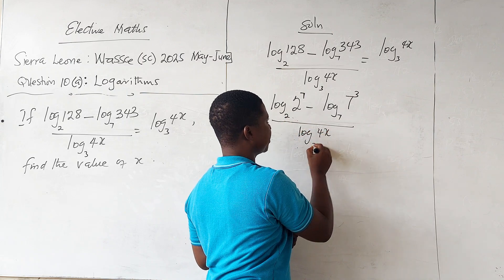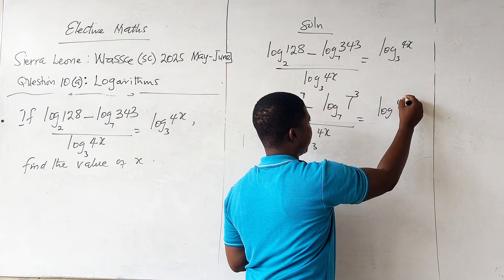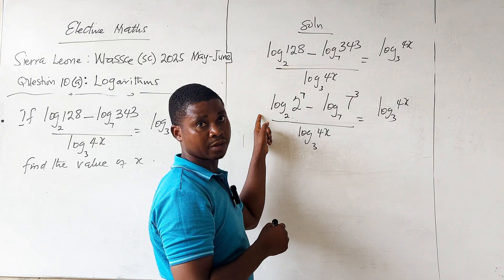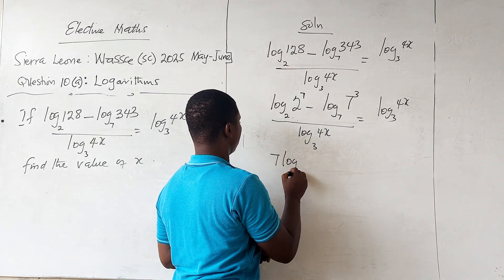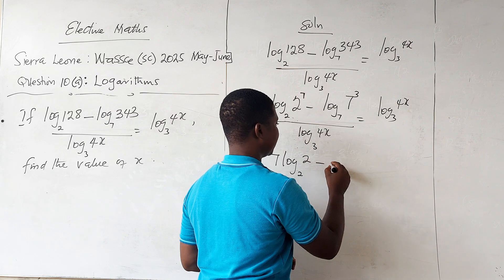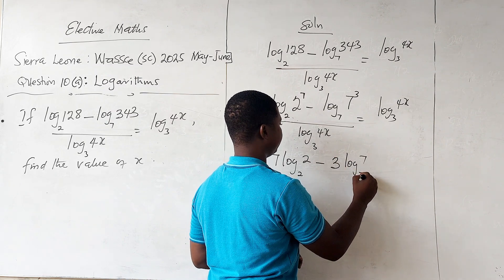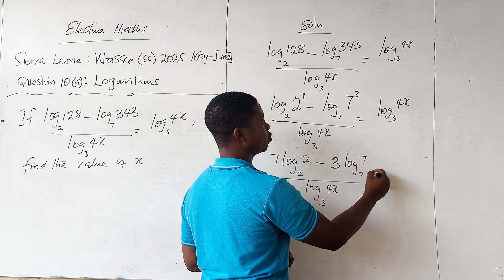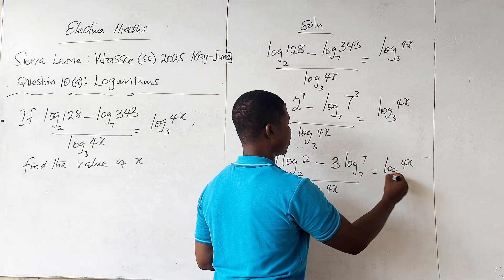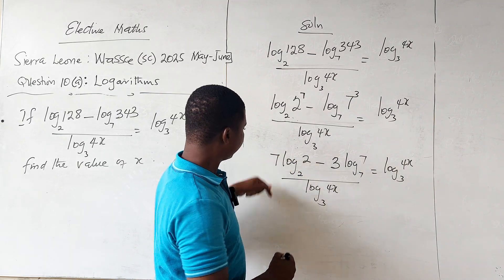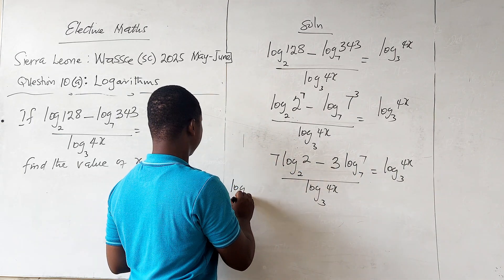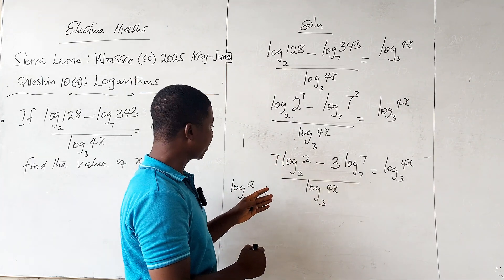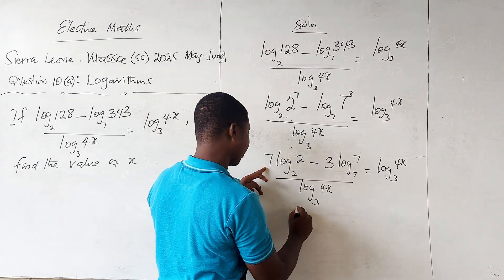All over log 4x base 3, equals log 4x base 3. From the laws of logarithms, the power comes down: we get 7 log 2 base 2 minus 3 log 7 base 7, all over log 4x base 3, equals log 4x base 3. From the properties of logarithms, log of a number with the same base gives us 1, so log 2 base 2 equals 1 and log 7 base 7 equals 1, giving us 7 minus 3.